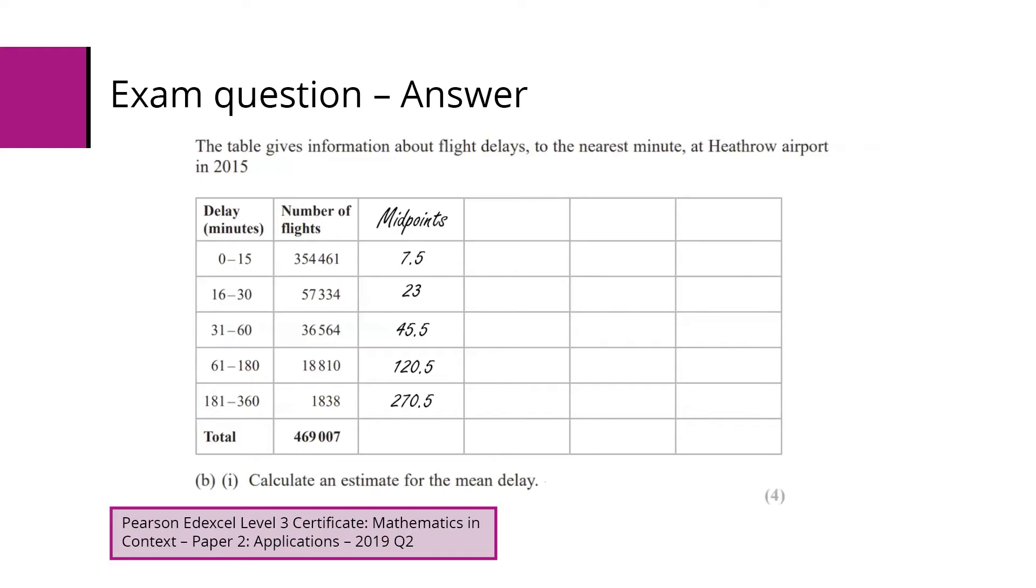Because we've got grouped data, we want to work with the midpoints or the mid interval values. You can add them up and divide by two to get your midpoints, and then we want to multiply the frequency, the number of flights, by our midpoints. So frequency times midpoints gives you those values there.